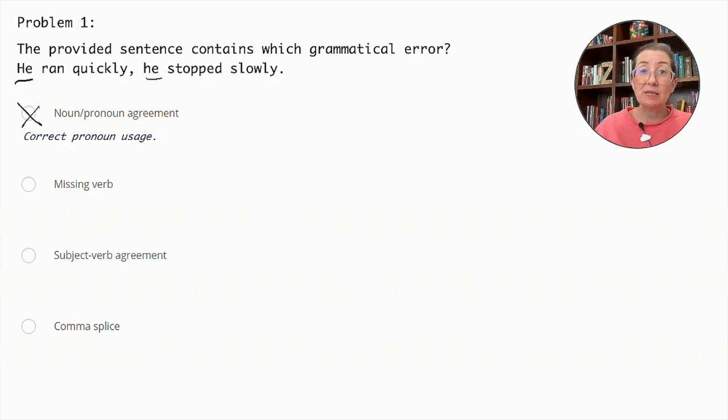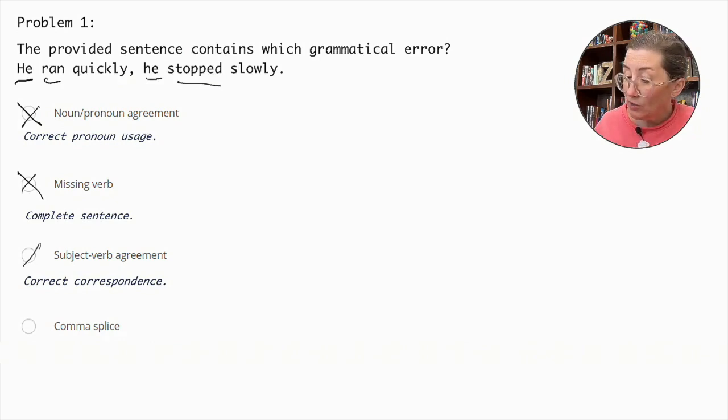A missing verb implies an incomplete sentence, yet both clauses have their verbs: ran and stopped. Subject verb agreement concerns the correct correspondence between subjects and their verbs, which is also correct in this sentence. We can eliminate both of these options.